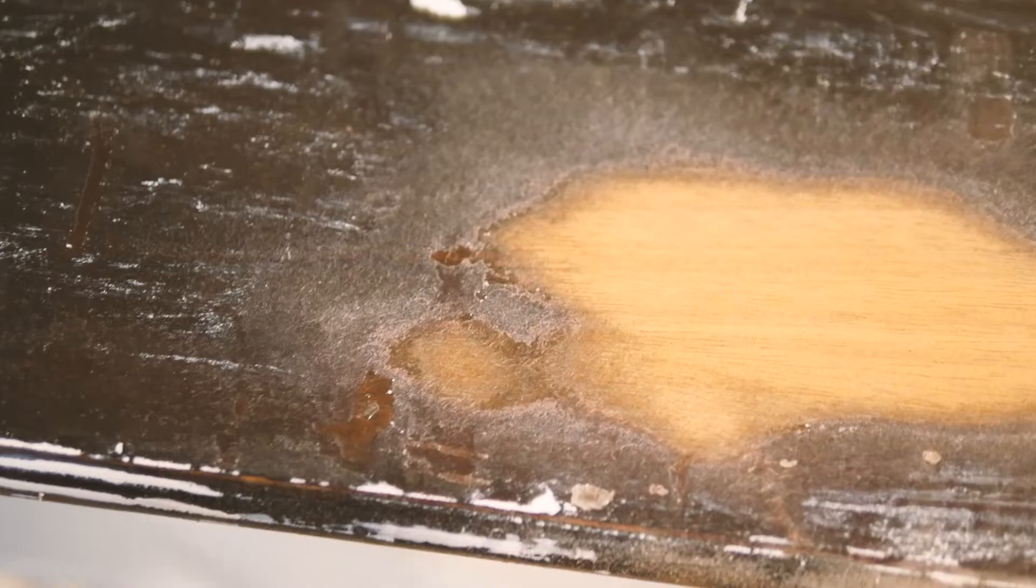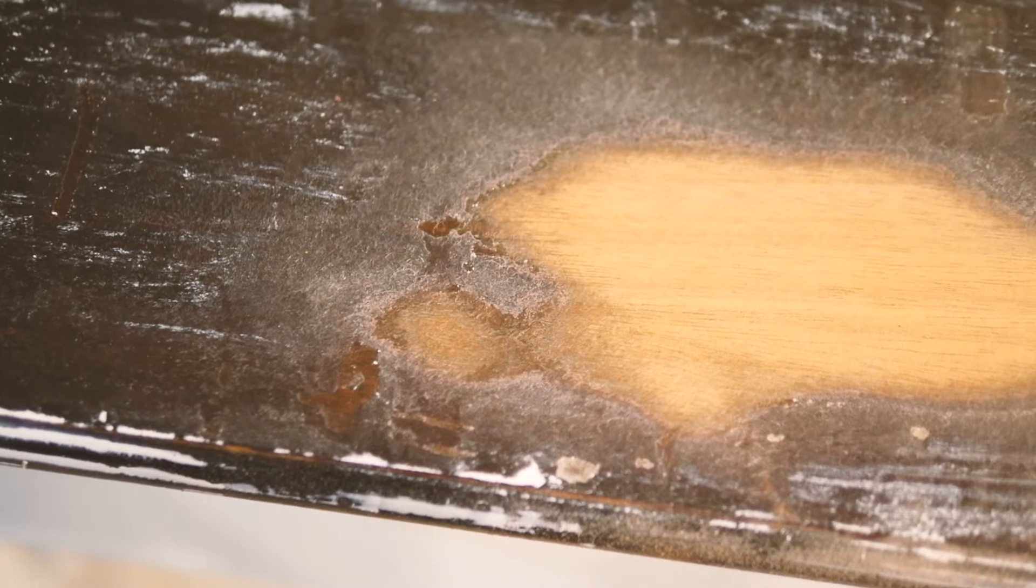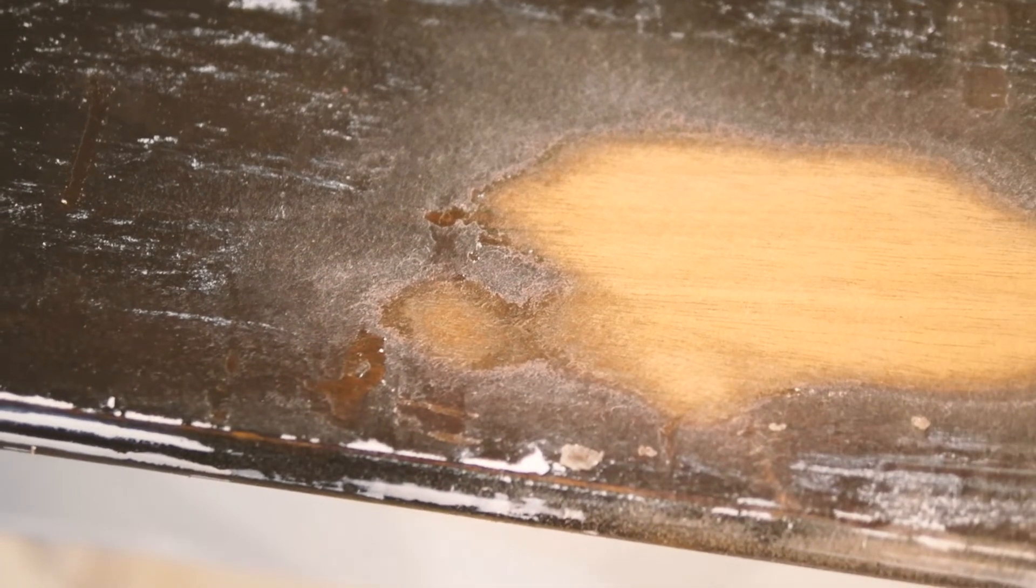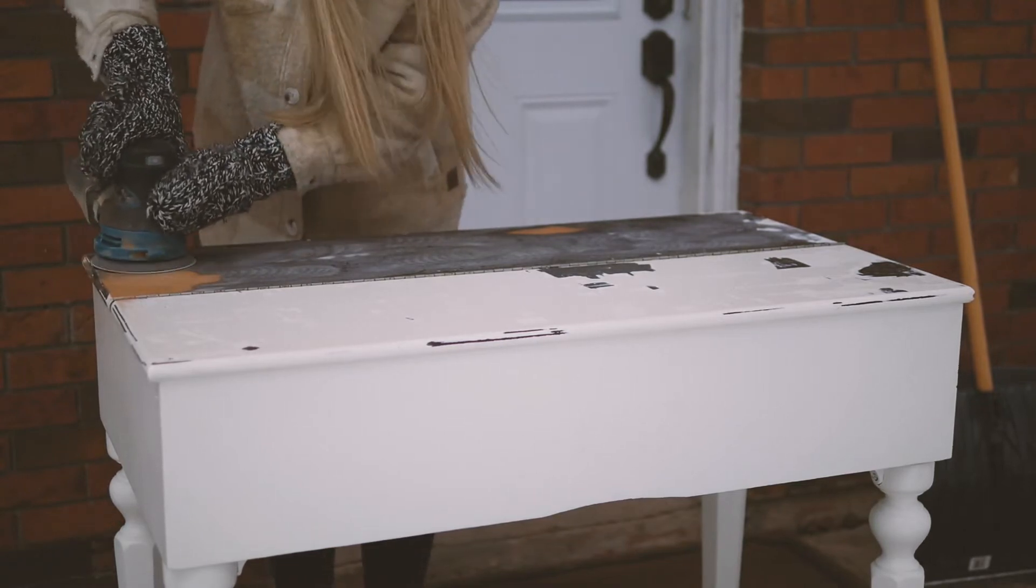So there was a couple coats of melamine paint, and then there was a varnish, and then there was a stain, and then finally the beautiful mahogany wood underneath. I decided to go ahead and start sanding the piece down since the stripping was taking so long and wasn't really getting me anywhere.